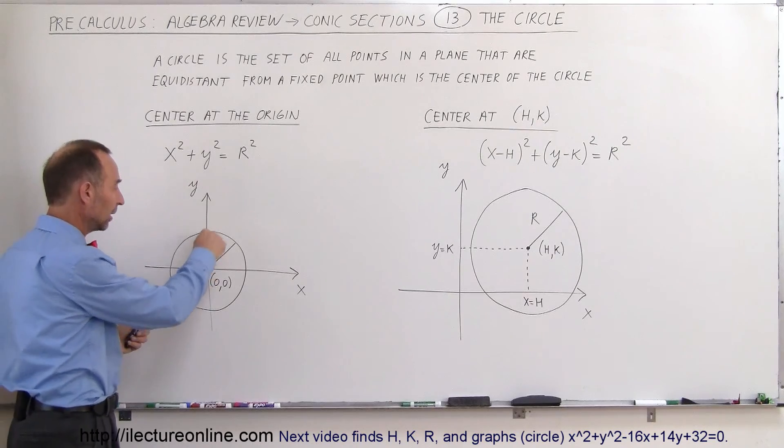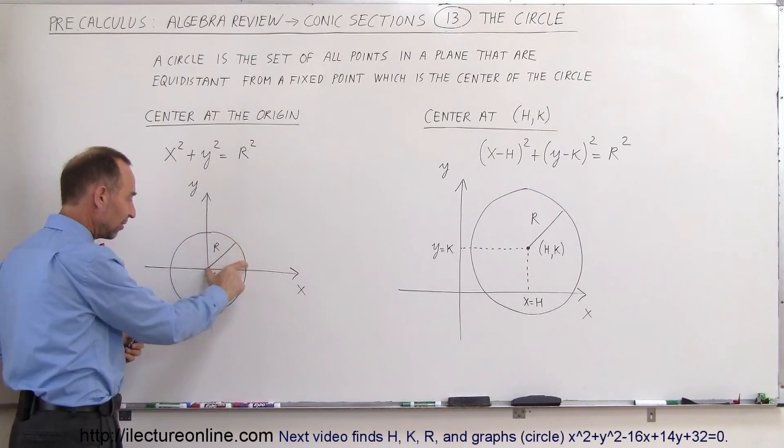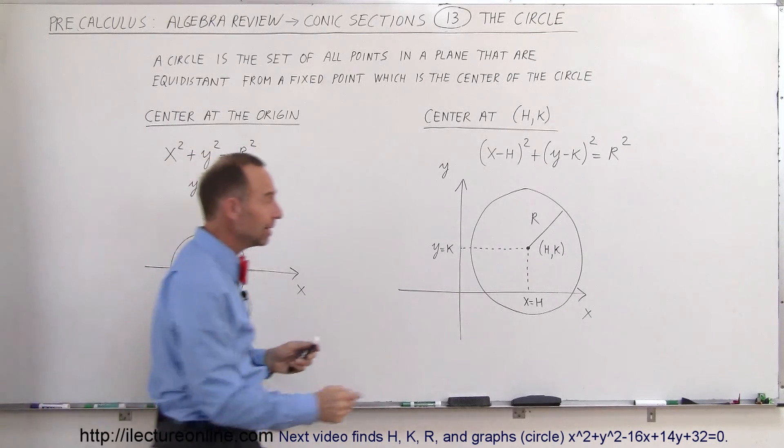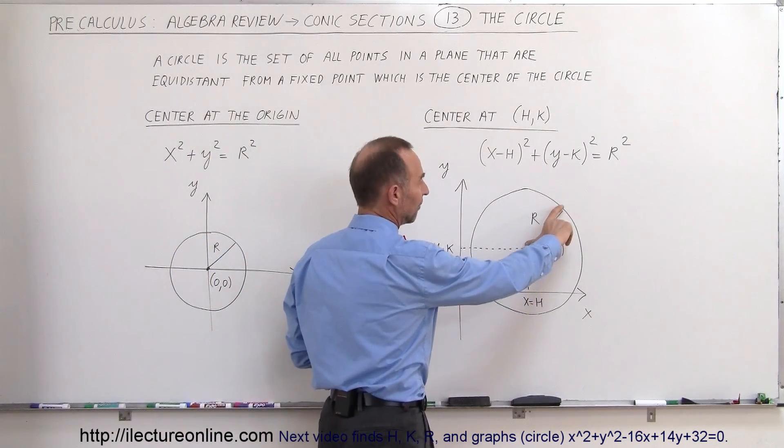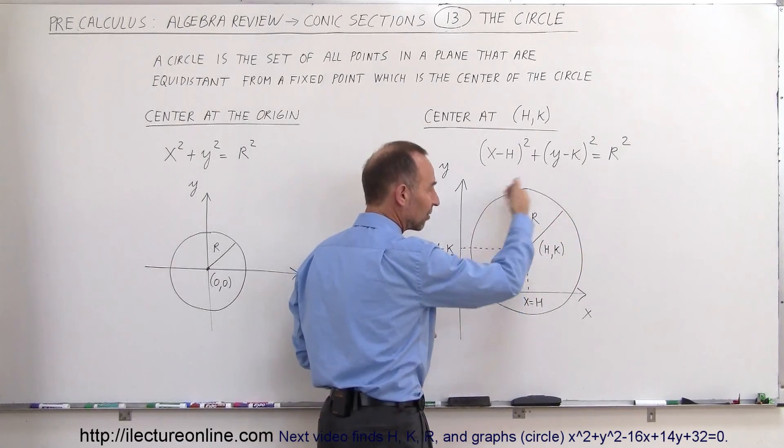So here we have the center of the circle and any points on this line right here is the same distance away from the center, so that makes that a circle. Here again, here's the center of the circle and every point on the line is the same distance away from that center, so therefore that makes this a circle.